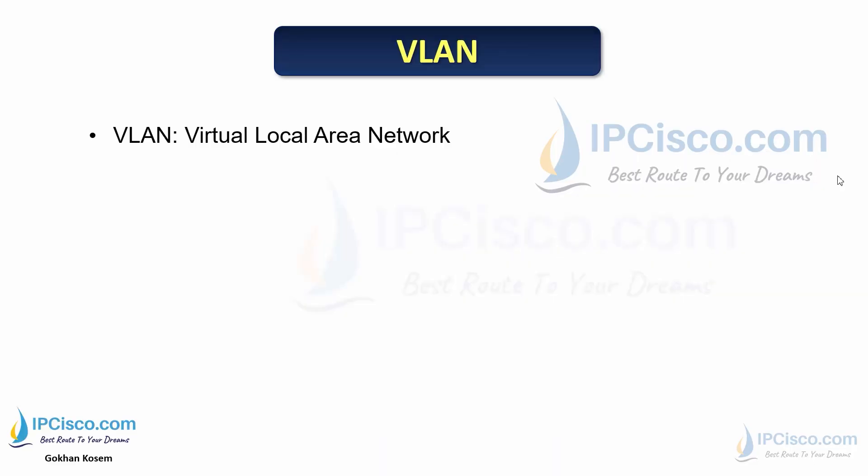VLAN — Virtual Local Area Network. We have talked about local area networks before, so VLANs are the virtual ones of local area networks. We use virtual LANs to divide our local area network and the devices on it logically on Layer 2, the data link layer of the OSI model.